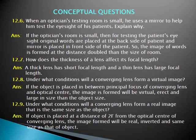Under what conditions will a converging lens form a real image that is the same size as the object? The object must be placed at a distance of 2F from the optical center. If the object is at the 2F distance from the optical center, the converging lens will produce a real image the same size as the object.